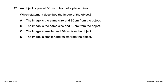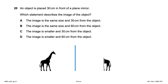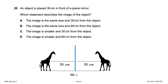An object is placed 30 cm in front of a plane mirror. Which statement describes the image? A plane mirror produces the same size image, so C and D are wrong. The image appears 30 cm behind the mirror, so the total distance from object to image is 60 cm. The image is the same size and 60 cm from the object — option B.